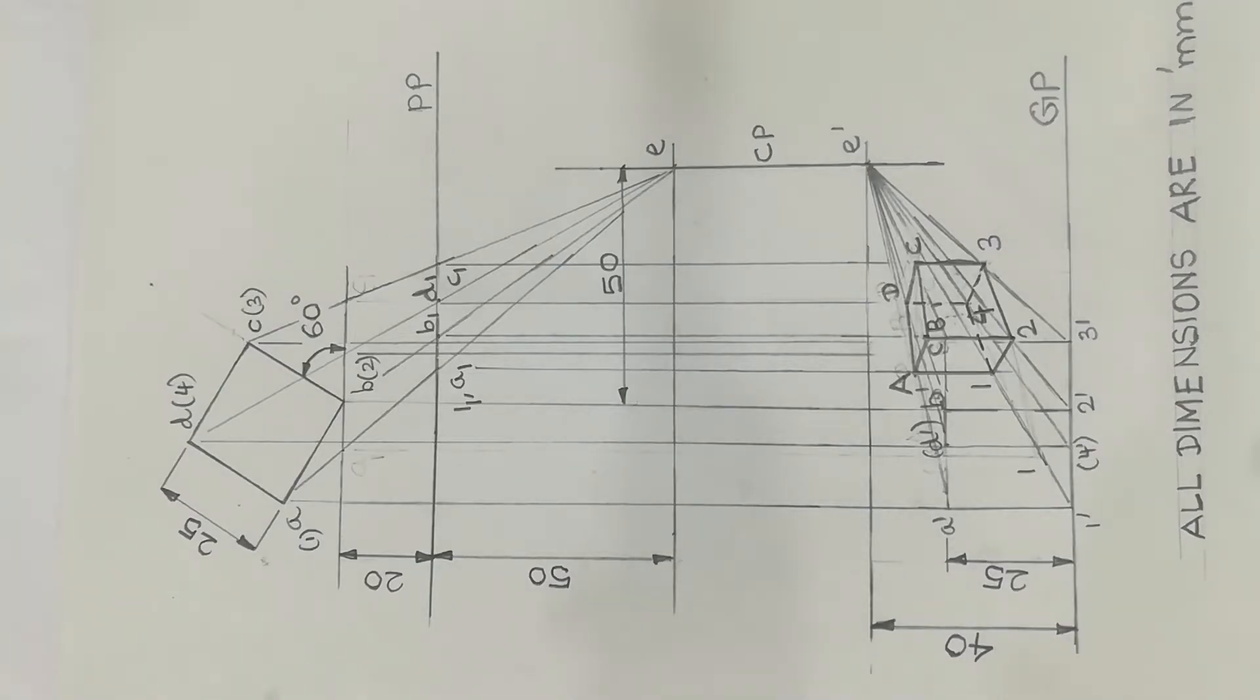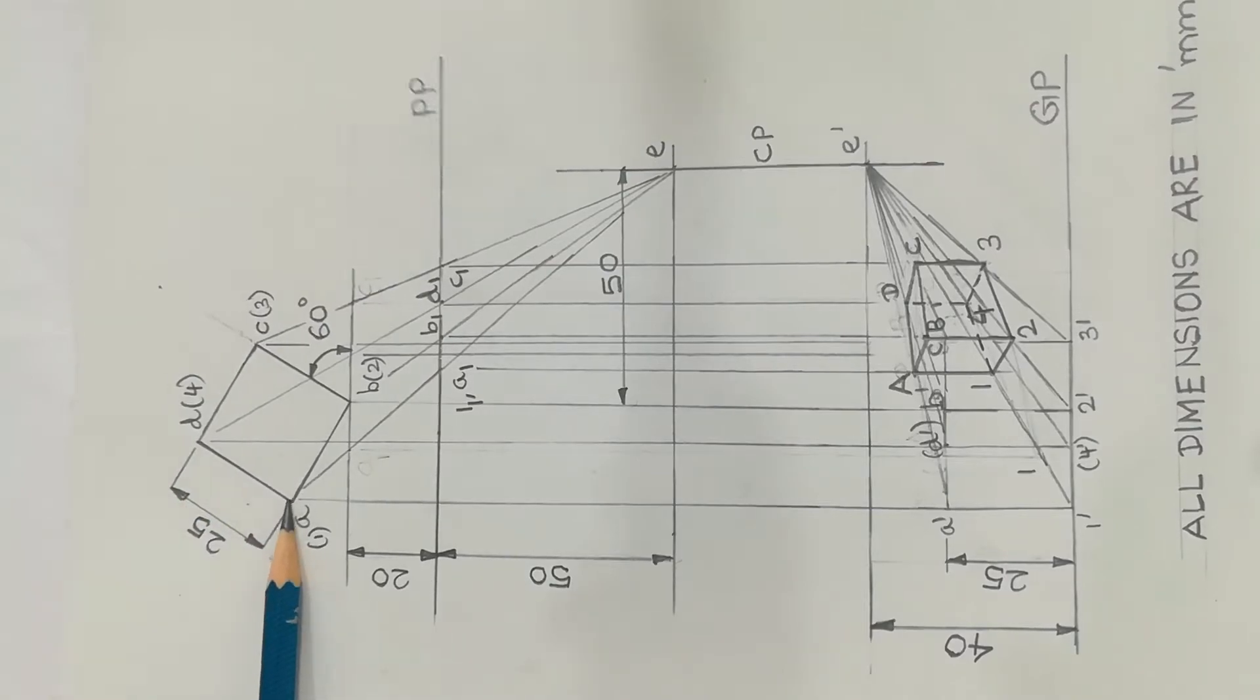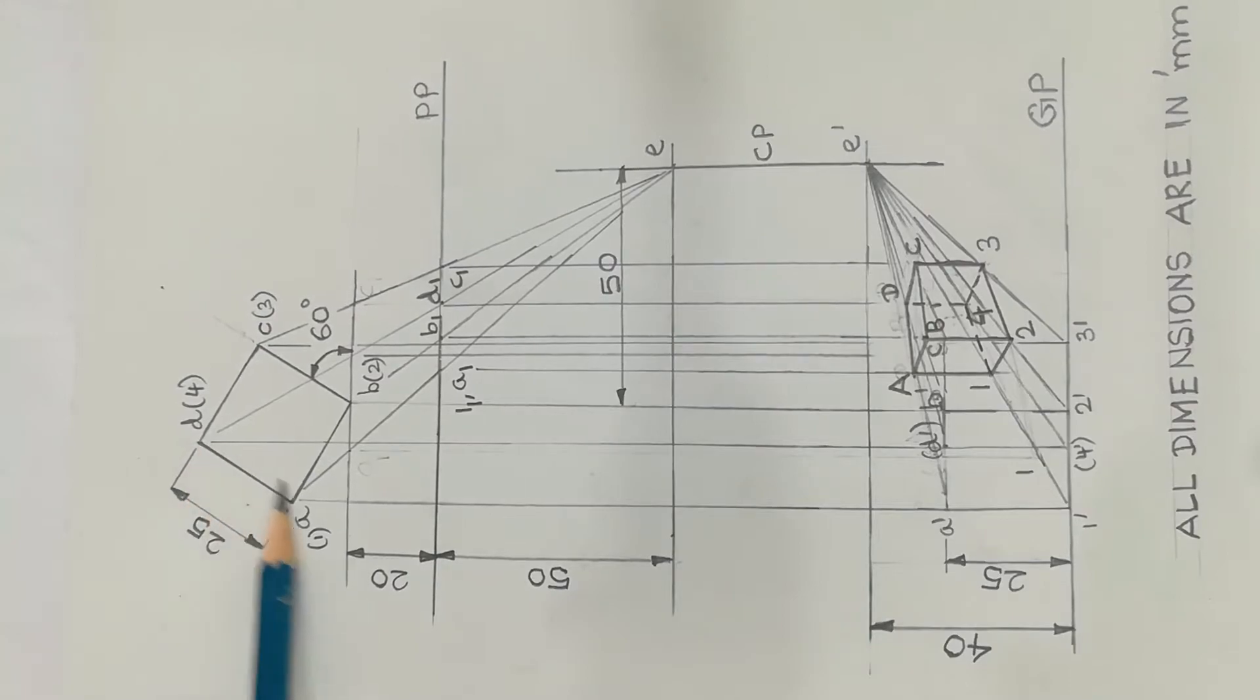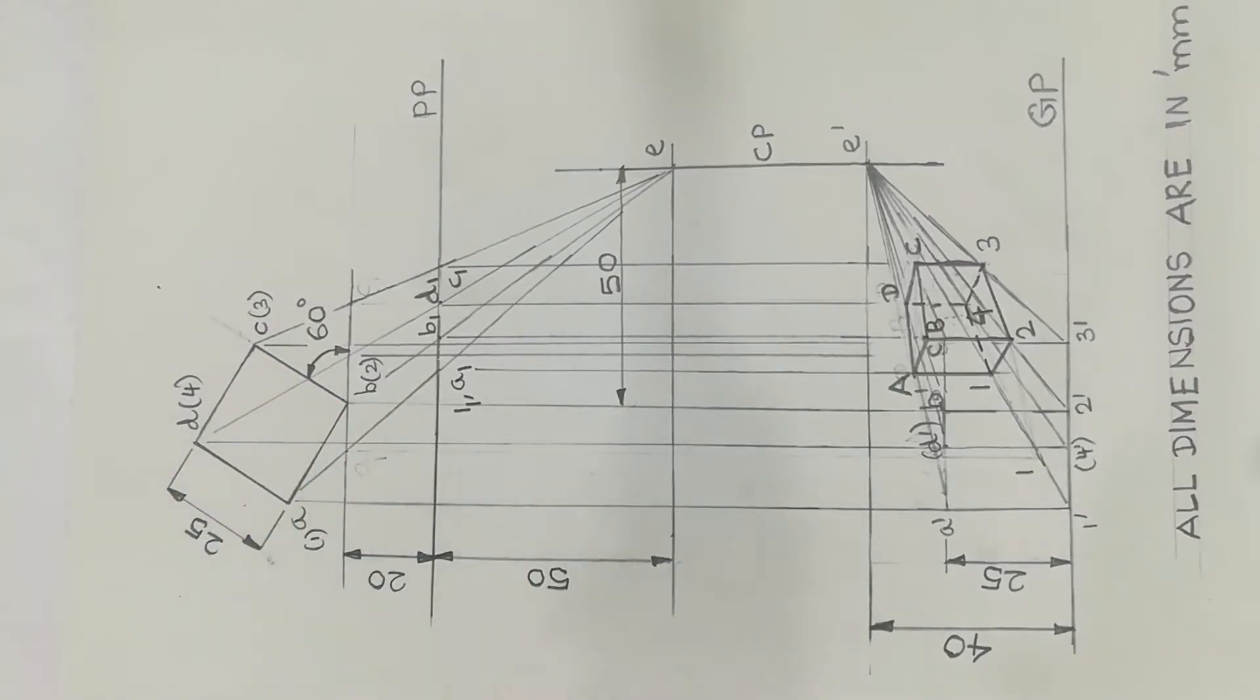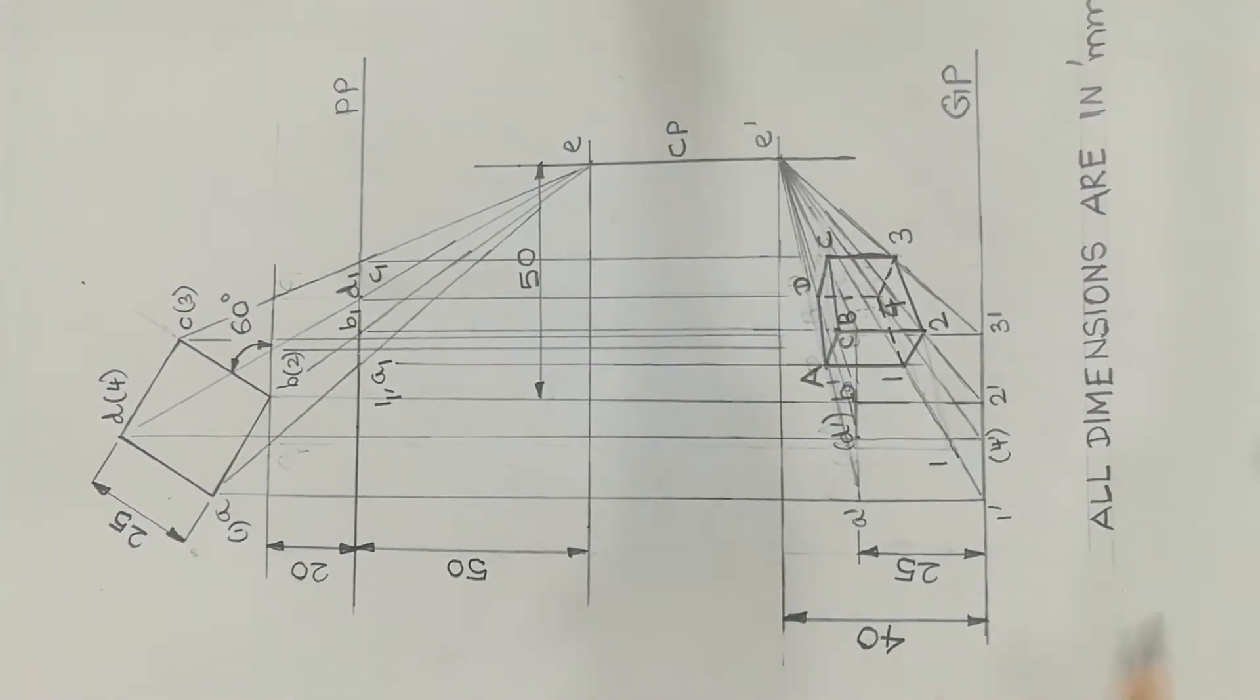This is the description of this diagram. First, the top view - the top view corners are A, B, C, D. This is the top view. This is the exact front view - corners A dash, B dash, C dash, D dash - top corners.